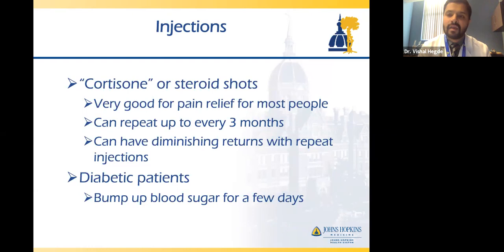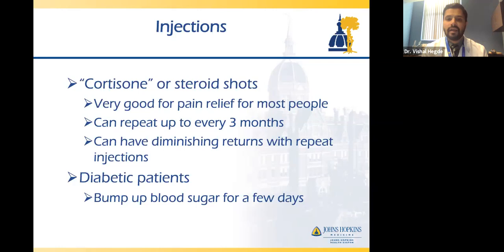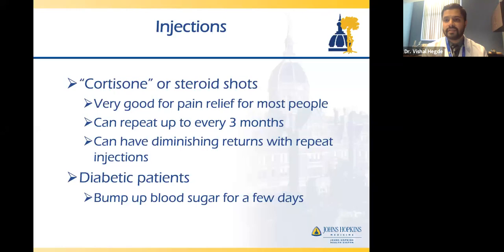The next stage is injections. The first line are cortisone shots — an excellent way to get pain relief for most people. The first time you get one, you can have great pain relief for months. You can repeat cortisone shots up to about four times a year. However, there can be diminishing returns over time — the first might work for six months, the next for three months, then six weeks. For diabetic patients, cortisone can bump up blood sugar for three or four days after the shot.